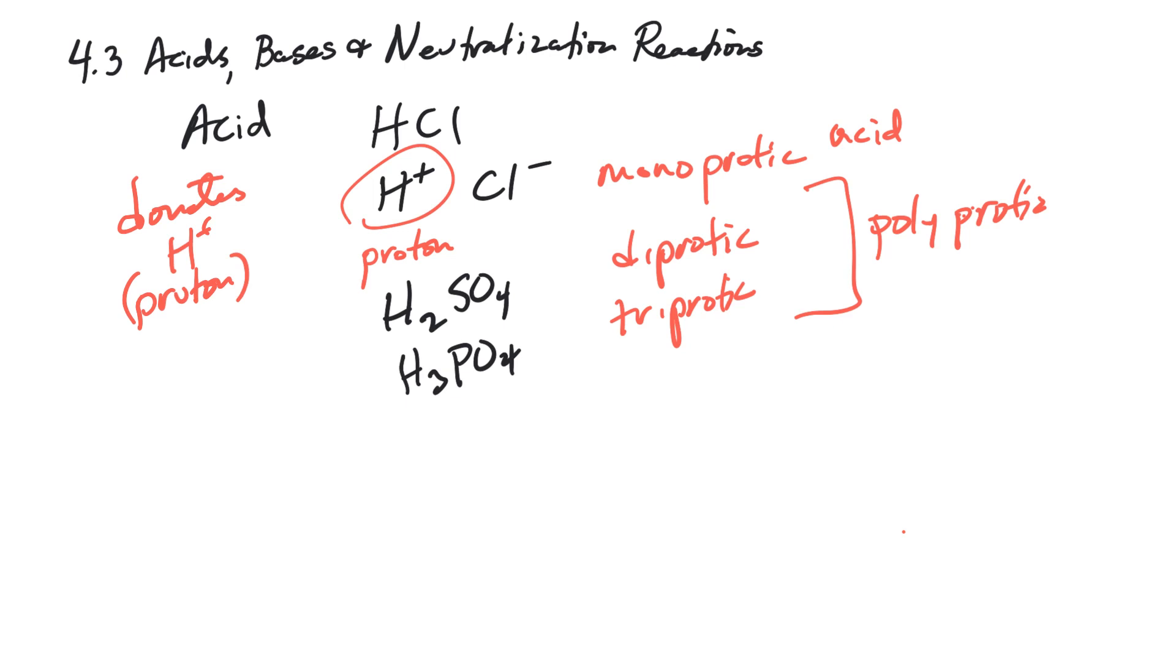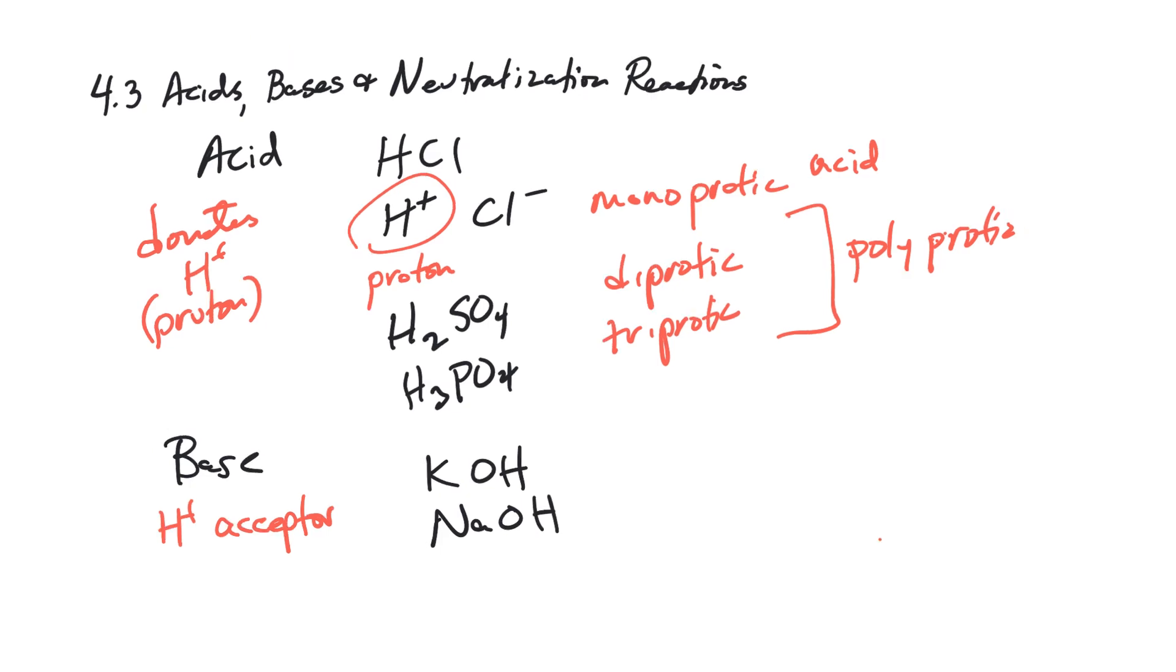So the opposite of an acid is a base. So a base would be a proton acceptor. So if it takes a proton on itself, like donating it gives it to something else, a base accepts it, that would be a proton acceptor. And a lot of bases are hydroxides. So you could have something like potassium hydroxide or sodium hydroxide. A lot of group 1 or group 2 hydroxides are bases. But we'll find out later that you don't have to be a hydroxide to be a base. There's other molecules that can receive a proton. As long as it can receive a proton, it acts as a base.